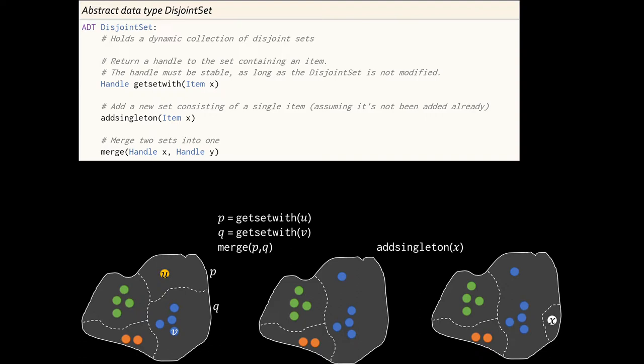When we call GetSetWith, we tell it an item, for example, a vertex U or V, it gives us a handle, a reference to the set. The data type doesn't specify what those handles are. It's just some way to refer to a set. And if we have a handle for a set, then we can take two set handles and we can merge them. So that's the abstract data type.